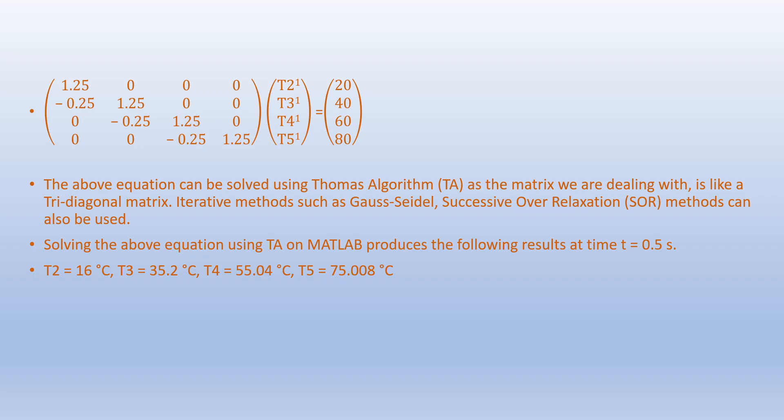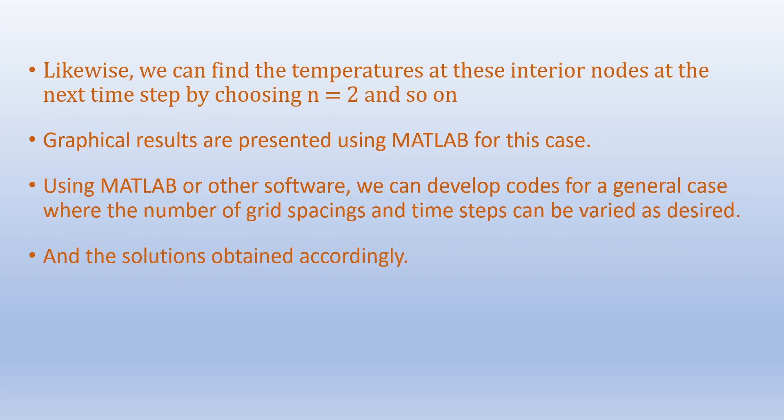When we solve the above equation using the Thomas algorithm, we get results at time t equals 0.5 seconds: T2 equals 16 degrees Celsius, T3 equals 35.2 degrees Celsius, T4 equals 55.04 degrees Celsius, and T5 equals 75.008 degrees Celsius. Likewise, temperatures at interior nodes at the next time step can be found by choosing n equals 2 and so on. We will be presenting graphical results using MATLAB for this case.